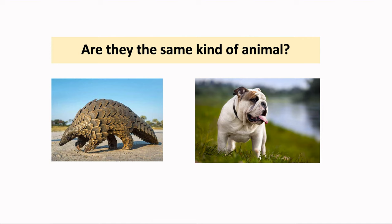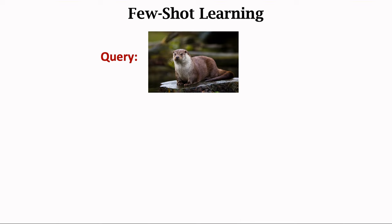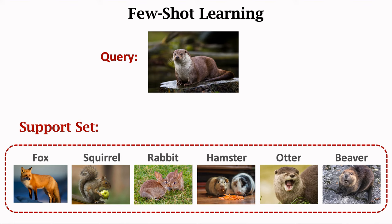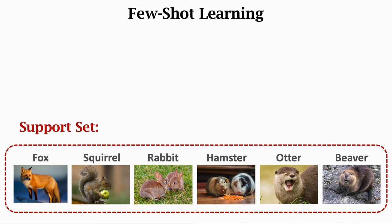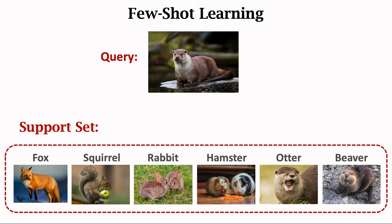Then I show two images to the model. While the model has never seen pug and bulldog, it knows the two animals look quite different, so the model believes they are different objects. Now I ask a different question: I have a query image. I show it to the model and ask what it is. The model is unable to answer because it has never seen this kind of object during training. Then I provide the model with additional information — six images labeled as fox, squirrel, rabbit, hamster, otter, and beaver. Now the model can answer. It compares the query image with each of the six images, finds the query most similar to the otter image, and predicts the query is an otter.